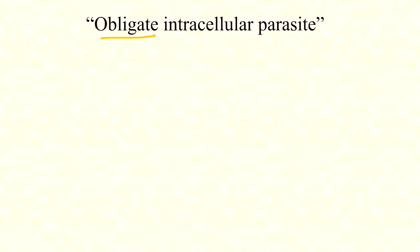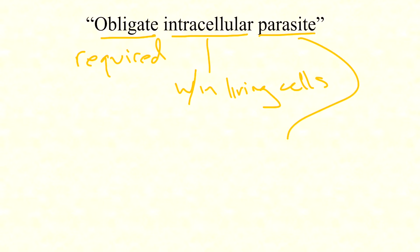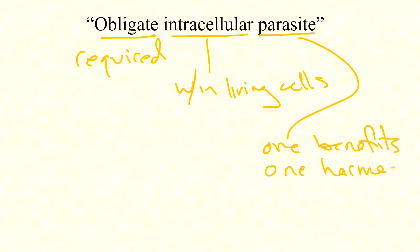Let's start with a simple definition: obligate intracellular parasites. We can break all three terms down. 'Obligate' means required — necessary, not an option. 'Intracellular' means within living cells. And 'parasite' means a relationship between organisms in which one benefits but the other is harmed. So what does this tell us? It's absolutely essential for a virus to get inside living cells — they have to be intracellular.